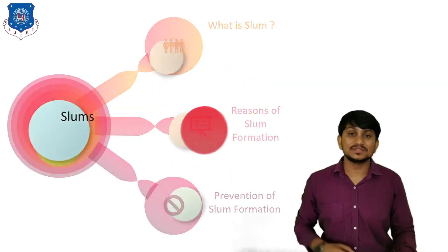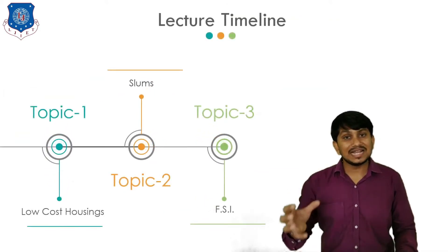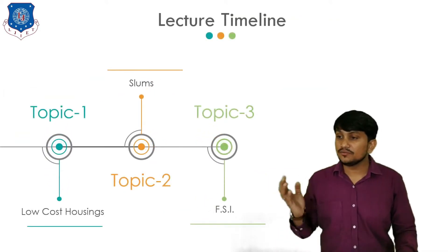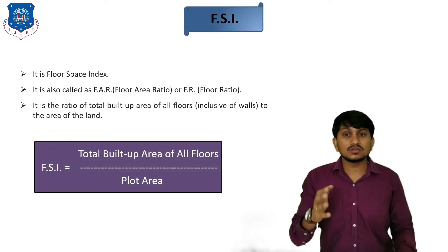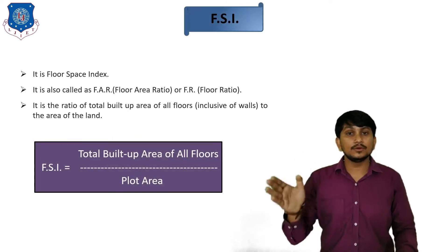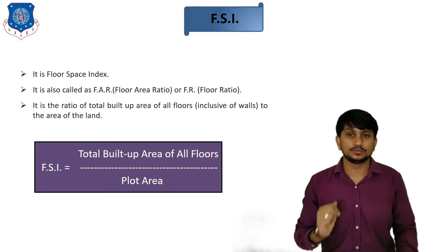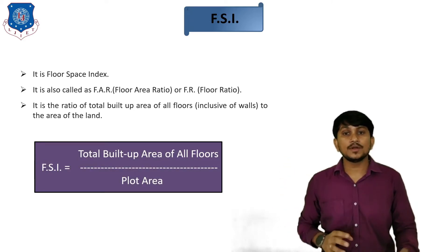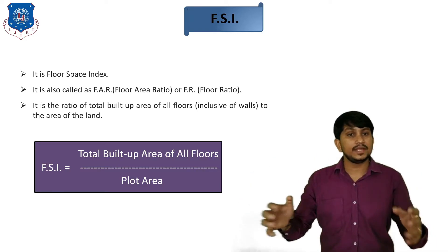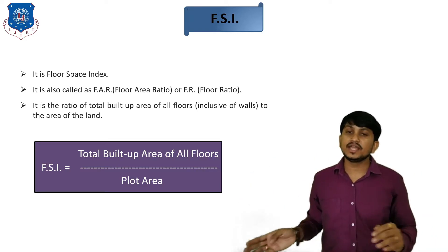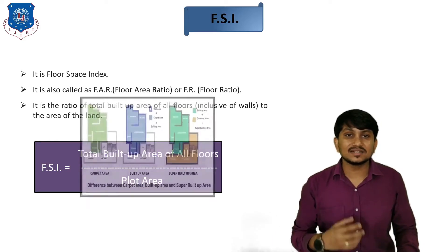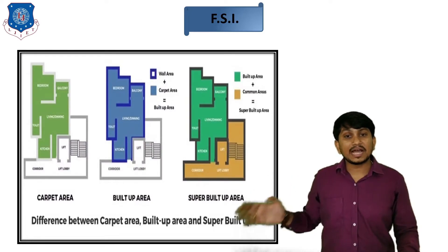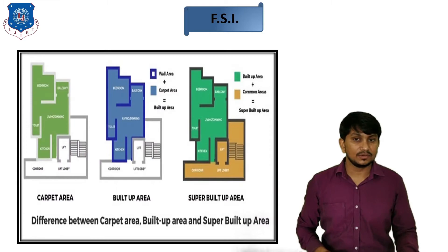Now let us understand the third topic in today's lecture, which is FSI — Floor Space Index. It is also called FAR, Floor Area Ratio, or FR, Floor Ratio. It is the ratio of total built-up area of all floors, including walls, to the area of the land or plot area. Now let us understand what is built-up area.